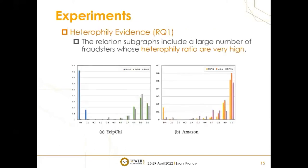For Question 1, we count the heterophilia ratios in two datasets. As we can see, since the relation subgraph includes a large number of fraud connections, both heterophilia ratios are very high. Consequently, heterophilic conditions are widespread in fraud detection, and graph-based fraud detectors should consider both homophilic and heterophilic connections simultaneously.